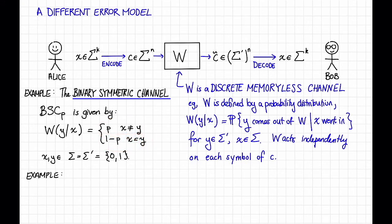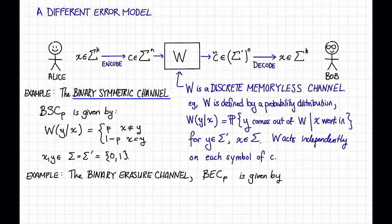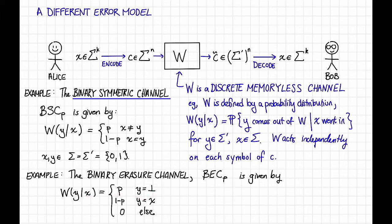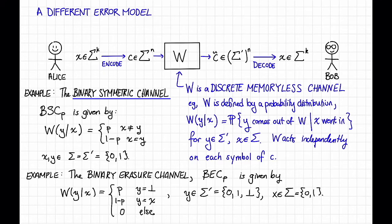Here's another example. The binary erasure channel is the same thing except each bit is erased with probability p. We denote this by BEC sub p. The BEC is given by this conditional probability distribution: the probability that y comes out of the channel given that x went into it is p if y is erased, 1 minus p if y is equal to x, and 0 otherwise. Here y is in the output alphabet sigma prime, which is {0, 1, erased}, and x is in the input alphabet sigma, which is just {0, 1}. So the BEC just erases each bit independently with probability p.